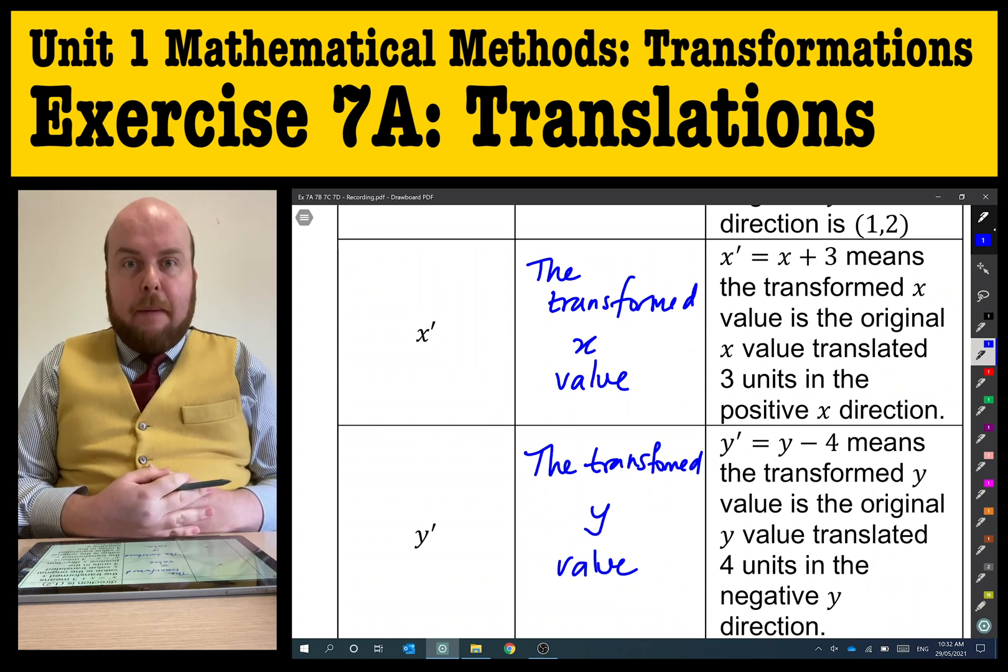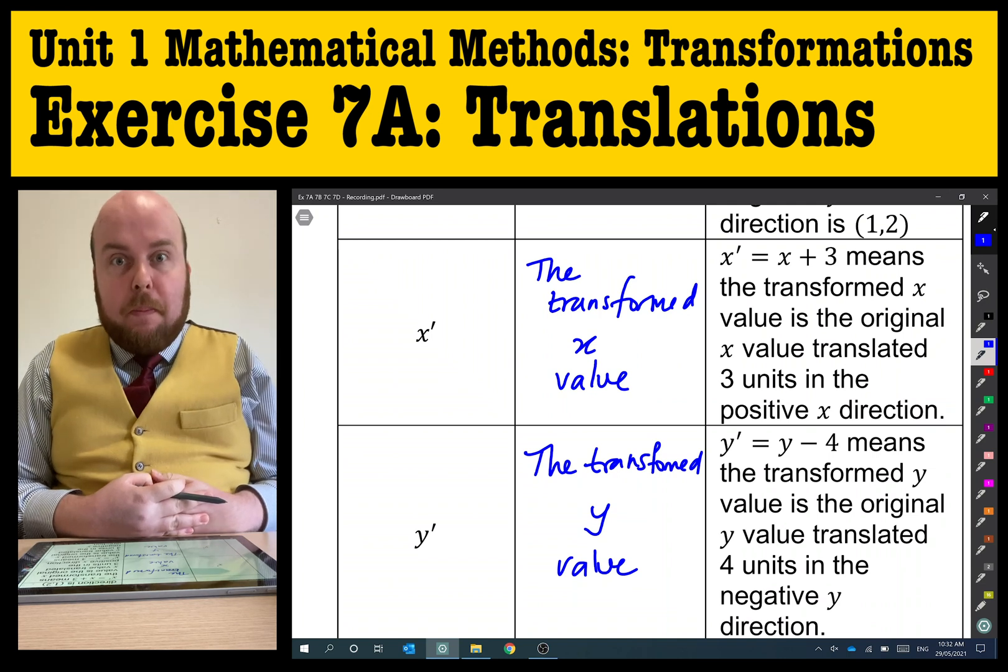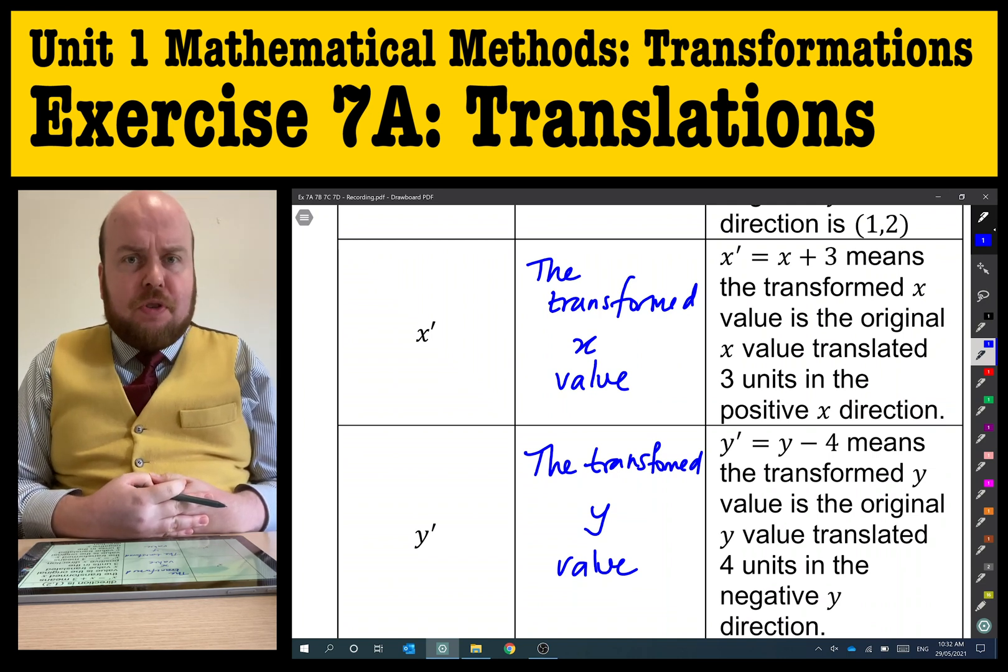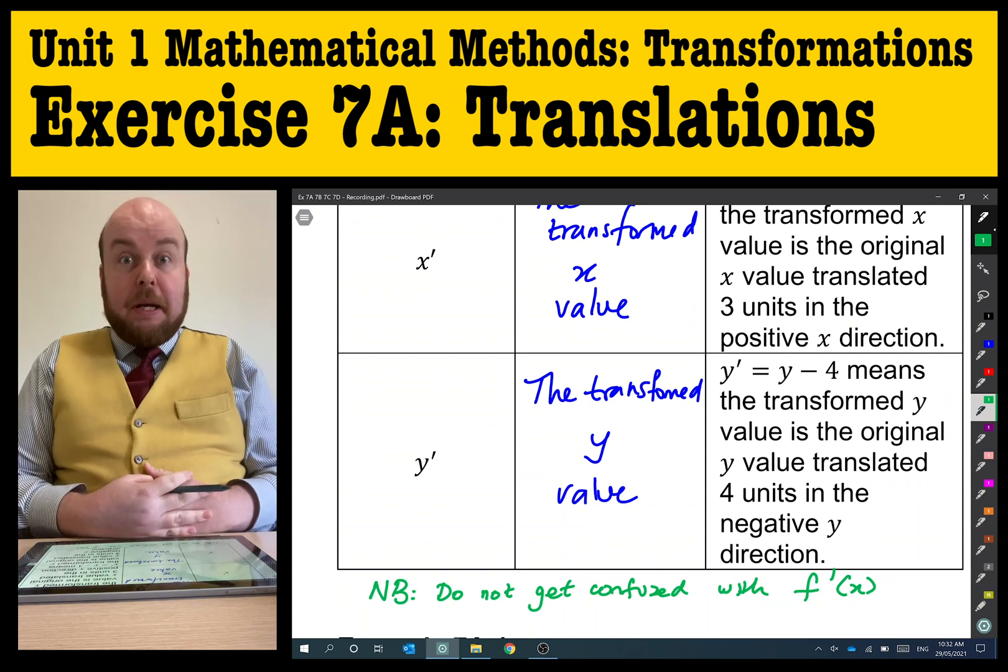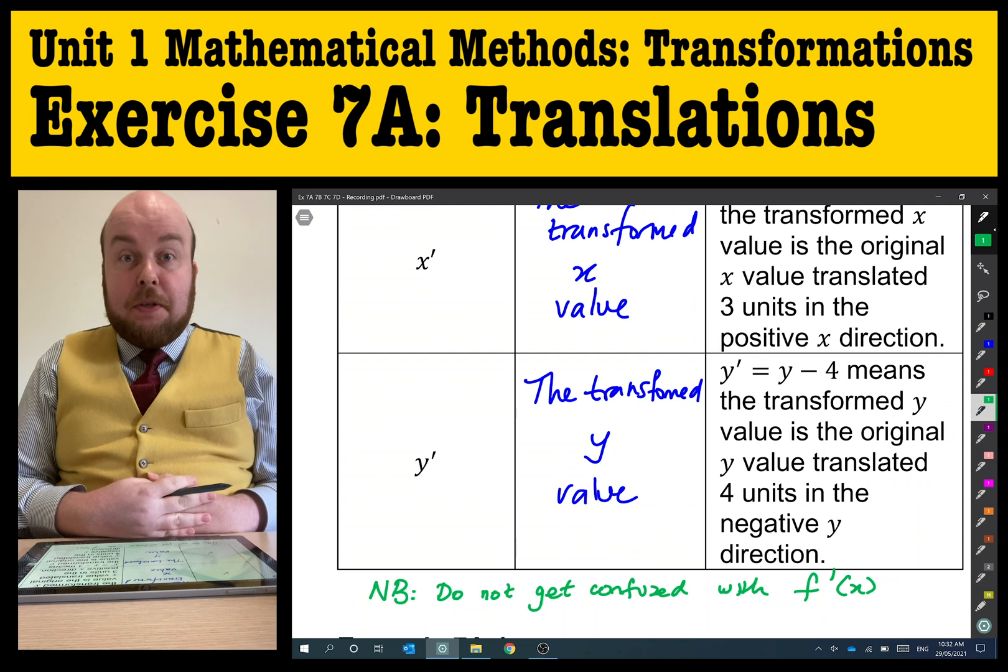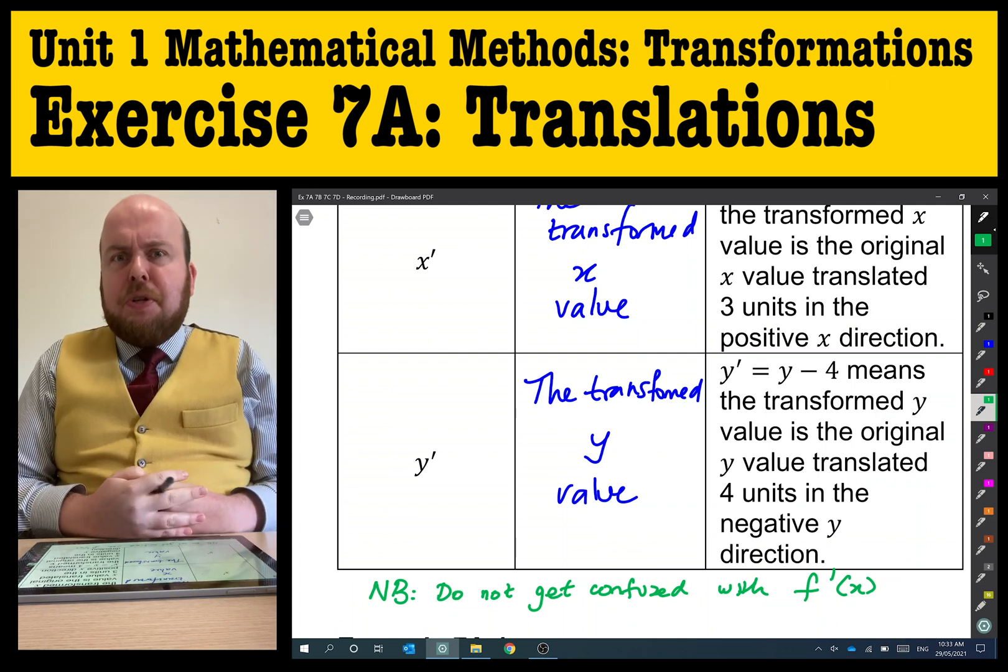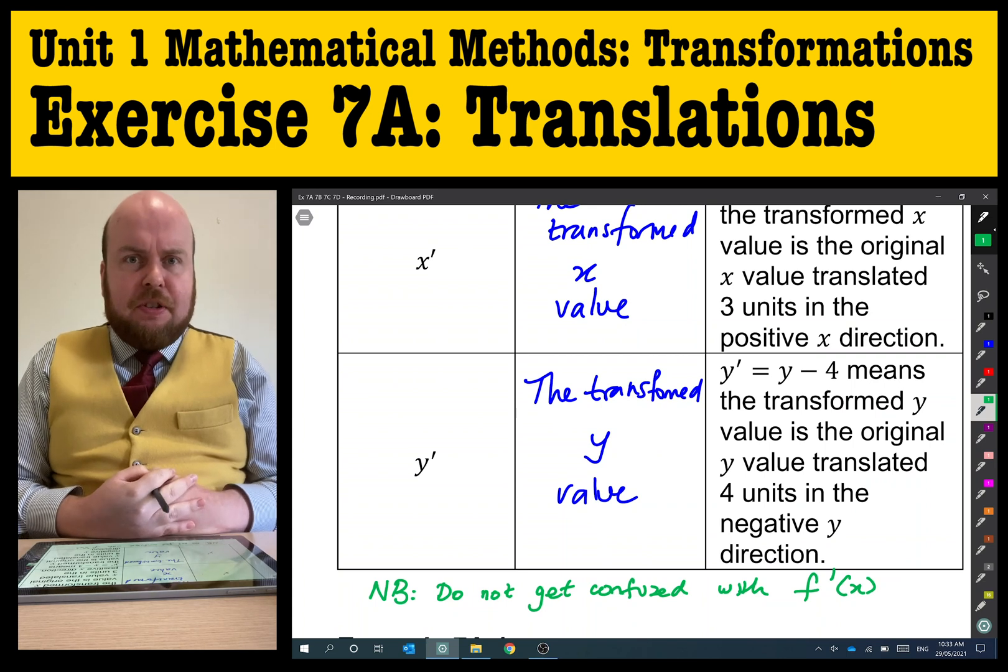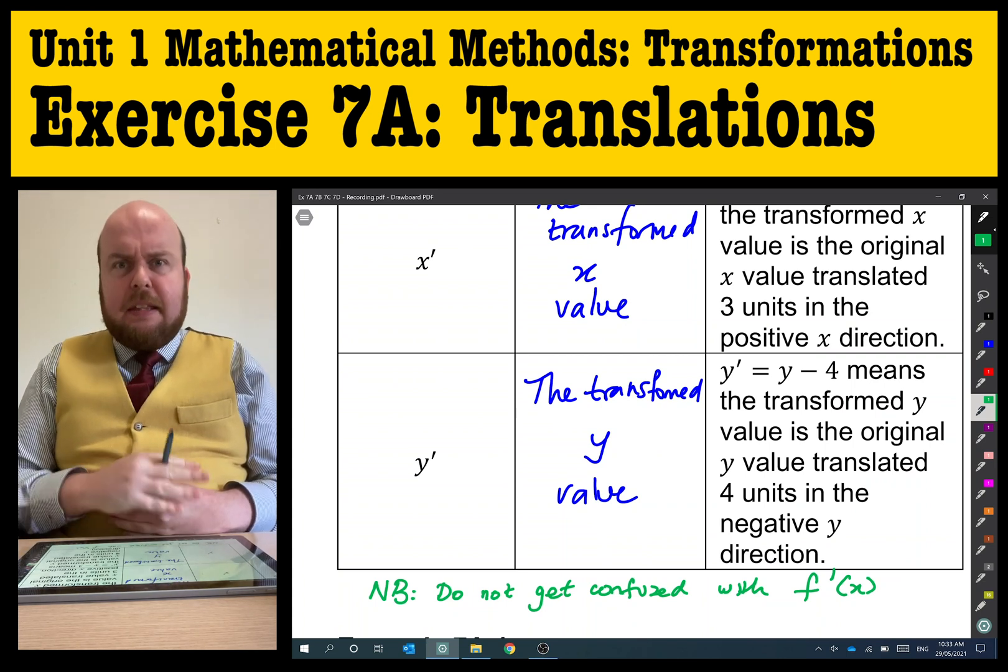x-apostrophe and y-apostrophe. These are both symbols for meaning the transformed version of x and the transformed version of y. Although, please note, when we put an apostrophe next to these x's and y's, please do not get it confused with f-apostrophe brackets x, because that usually means the derivative of the function. That's something we're not going to cover until we look at calculus. So don't get these confused.